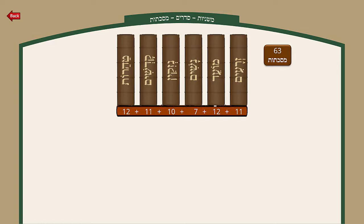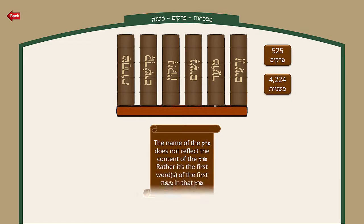There are 63 Masechtot, however it's known that it says Shishim Hema Malchus — meaning there are 60 Masechtot. One explanation is that the three Bavas are considered one Masechta, so we remove two because instead of having Bava Kamma, Bava Metzia, and Bava Basra as three, we have one. In addition, Makkos and Sanhedrin are considered to be one Masechta.